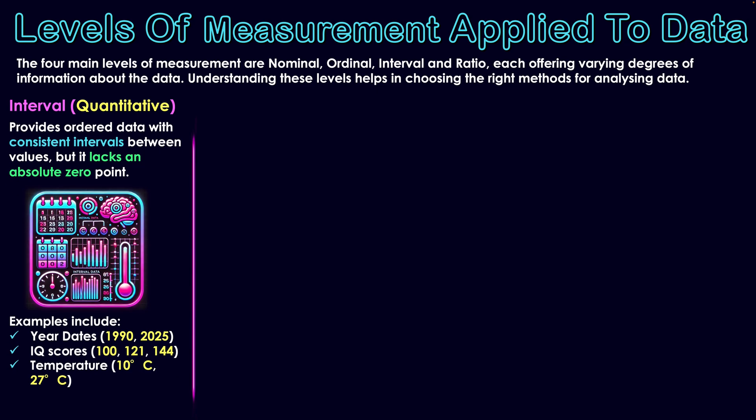The first level is interval data, which is a form of quantitative data. It provides data with consistent intervals between values, but lacks an absolute zero point, meaning zero is not always the starting point. Examples include year dates like 1990 and 2025 — year zero was not the first year of human existence, as it predates that into the BC era. The same applies to IQ scores, where the values are calculated with variation and zero is not a valid starting point. Temperature also applies, since we can go below zero with negative temperatures.